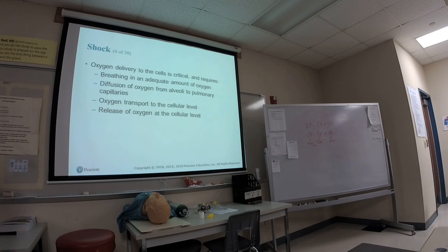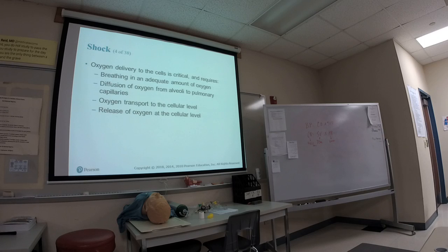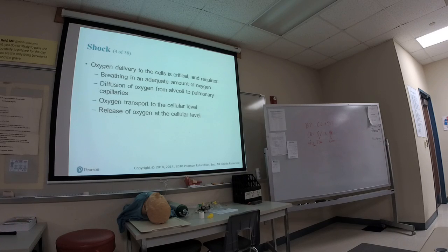Oxygen is transported on hemoglobin, which is attached to red blood cells. In different types of shock, that transport doesn't happen correctly. In hypovolemic or hemorrhagic shock, the patient is bleeding out — those red blood cells and hemoglobin are being lost. There's no way to deliver oxygen when the transport vehicles are literally spilling out on the ground.